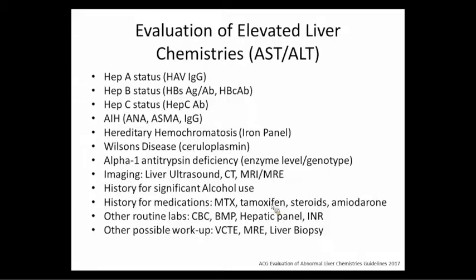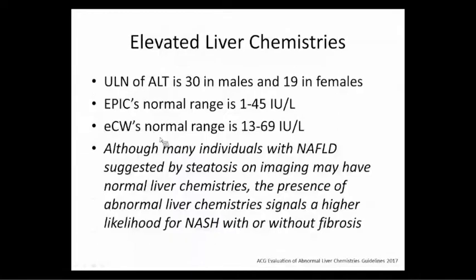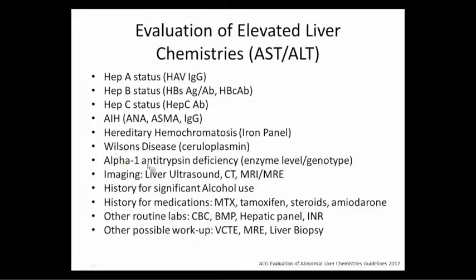I check Hep A status not because it's causing the liver disease, but because I need to vaccinate them for Hep A and check their Hep B status and vaccinate for Hep B. I also work them up for hereditary hemochromatosis, Wilson's disease, and autoimmune hepatitis. Nowadays when we biopsy folks, it's often whatever disease plus fatty liver — I recently biopsied someone with known autoimmune hepatitis and an Asian female with a BMI of 25 who had NASH plus autoimmune hepatitis. I also take a thorough alcohol history, look for steatogenic medications like methotrexate, tamoxifen, and steroids, do routine bloodwork, and consider FibroScan, MR elastography, and liver biopsy if needed.